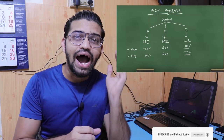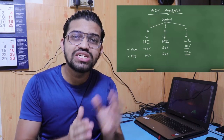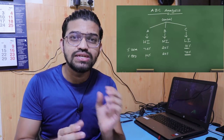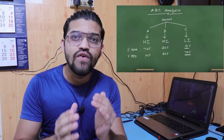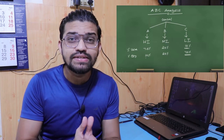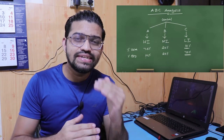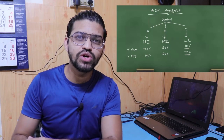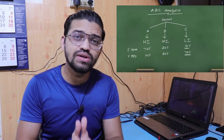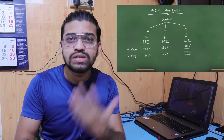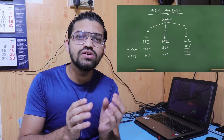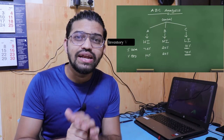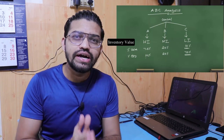Class A items cover about 10% of the total quantity but account for around 70% of the total inventory value — less quantity but highest value. Class B items represent 20% of inventory value and consume around 20% of quantity — moderate quantity and moderate value. Class C items make up 70% of the total quantity, including all fasteners, stud bolts, and gaskets — higher quantity but lower value.